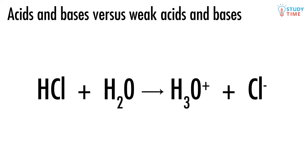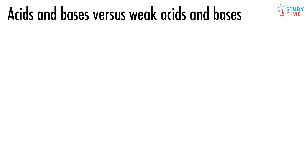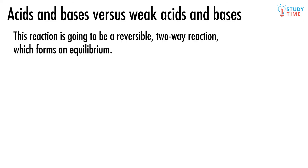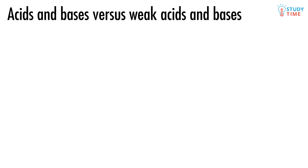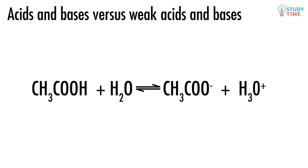So that was a strong acid. What about a weak acid? A weak acid is one that will only partially dissolve in water. This reaction is going to be a reversible two-way reaction, which forms an equilibrium. The most typical weak acid is ethanoic acid. The location of this equilibrium is heavily toward the left side of the reaction, which means that at equilibrium, we've got quite a bit more of the stuff on the left than we do on the right. Overall, this reaction does not produce very many hydronium ions, which is why a solution of ethanoic acid won't be very acidic.